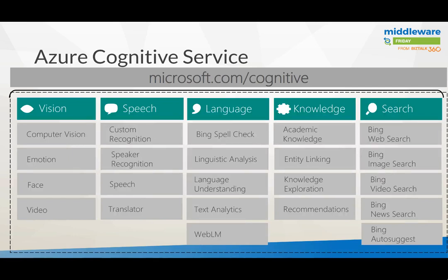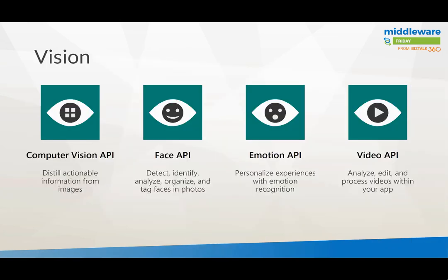Cognitive services can be leveraged through Logic Apps, a function, or even Flow. Different personas can work with cognitive services, which have a few pillars: vision, speech, language, knowledge, and search. Within each pillar you have different types of APIs. In Azure you can go to the portal, provision a cognitive service, choose one of the APIs and leverage them based on a certain SKU. The vision API provides the computer vision API, the face API, emotion, and video.